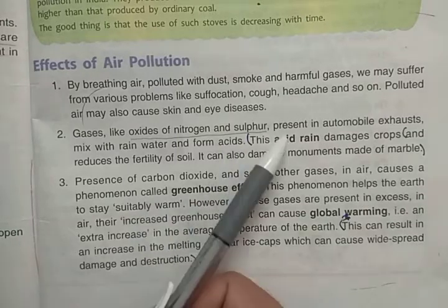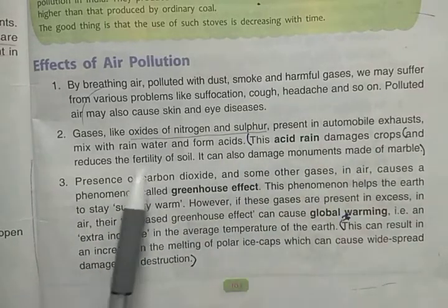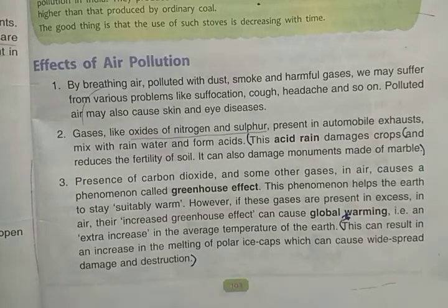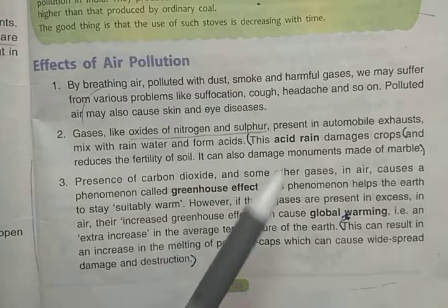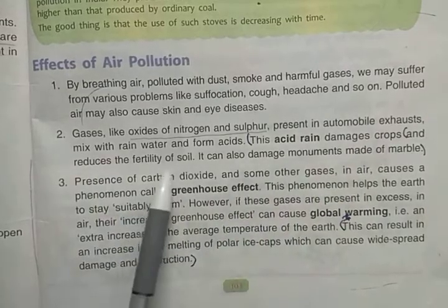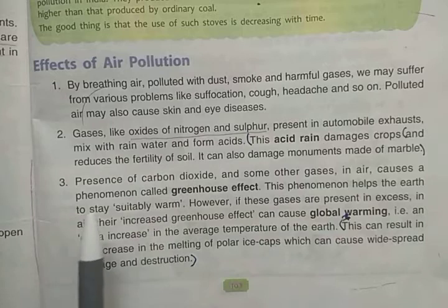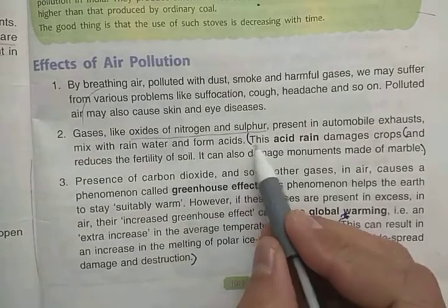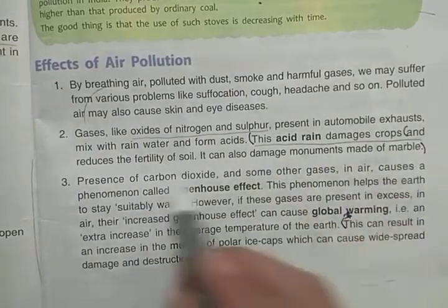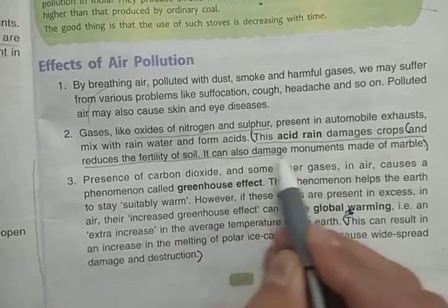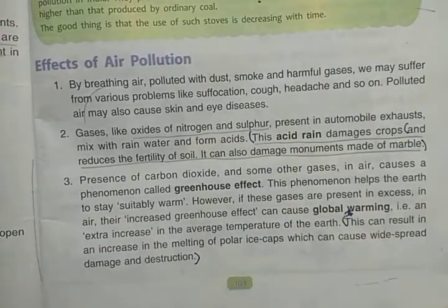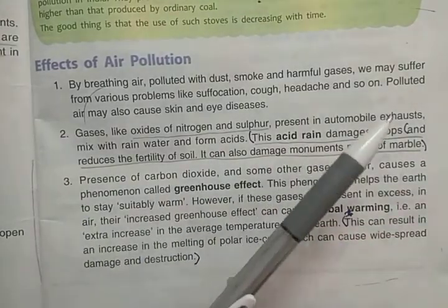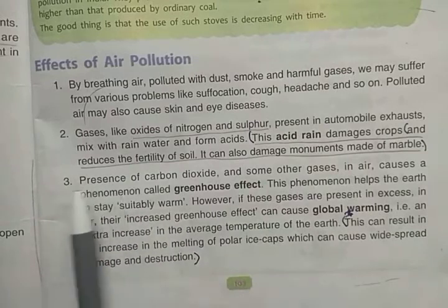This acid rain damages crops and reduces the fertility of soil. It also damages monuments made of marble. You should learn the effects of acid rain: it damages crops, reduces soil fertility, and damages marble monuments.